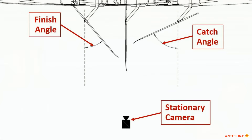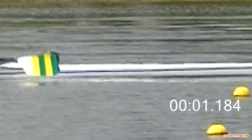The first step to measuring stroke position is to capture video of the athlete rowing past a stationary camera or smartphone at race rate and race intensity. Similar to previous rigging analysis videos, you must use a playback software with a frame timer that displays the time in hundredths or thousandths of a second.